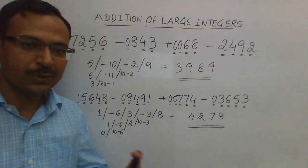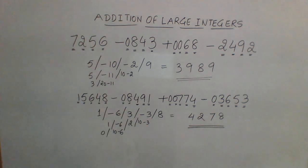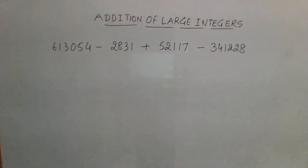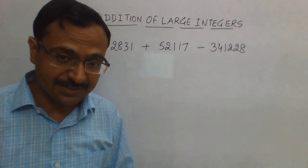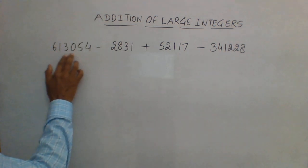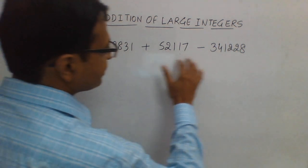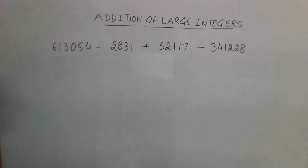So you can see, friends, how the method is helping us in getting the answer of such large calculations. Now let's see this problem. Here I have taken 6 digits in the number. You can see 6, 1, 3, 0, 5, 4—it's a 6-digit number, then 4-digit, 5-digit, 6-digit. So the maximum number of digits are 6. Let's equate the number of digits first.